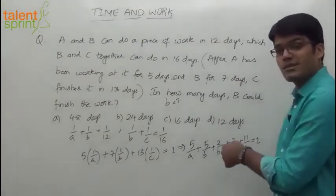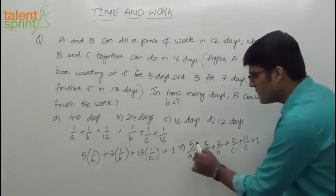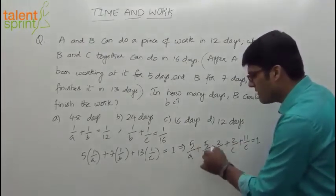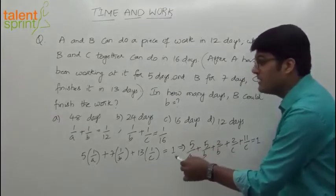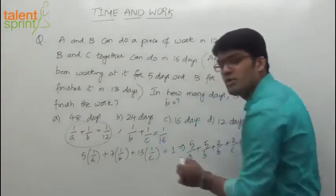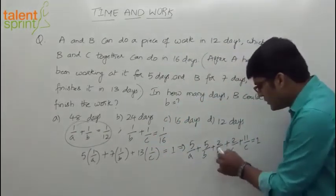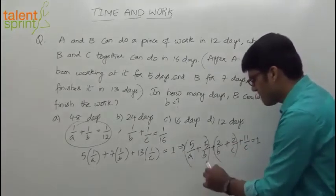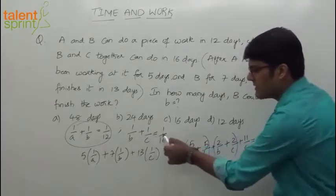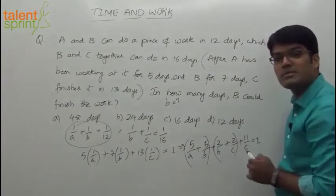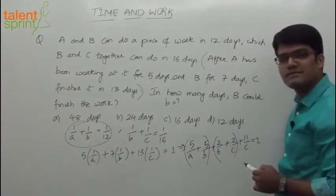By now you would have realized what's the advantage of this one. What can we do? If I take 5 common, what are we left with? 1 by A plus 1 by B. And I know that 1 by A plus 1 by B is equal to 1 by 12. Likewise, if we take 2 common here, what do we get in these two terms? 1 by B plus 1 by C. What is 1 by B plus 1 by C? 1 by 16. So I can directly substitute that, and I will get the value of C.